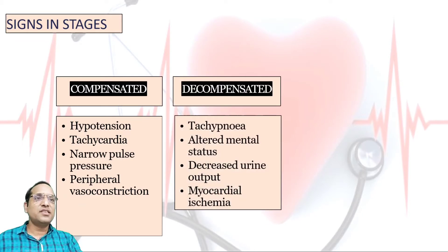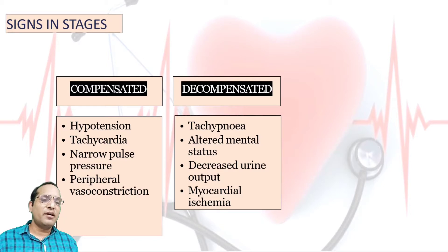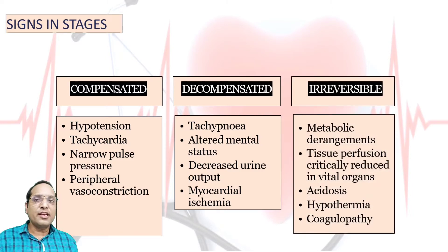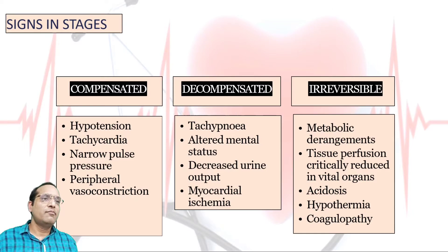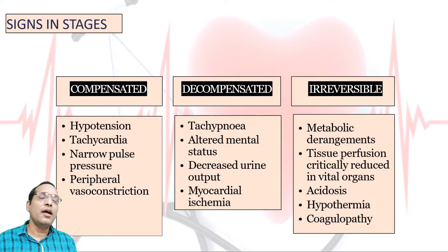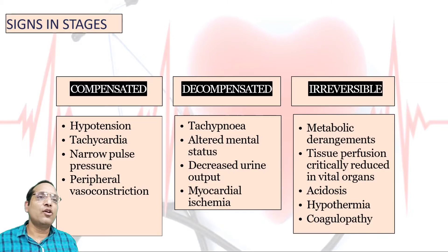In the decompensated or uncompensated shock, there will be tachypnea, altered mental status, decreased urine output, and myocardial ischemia. In the irreversible stage, there will be metabolic derangement with tissue perfusion critically reduced in vital organs such as brain, heart, kidney, and adrenals, along with lactic acidosis, hypothermia, and coagulopathy.